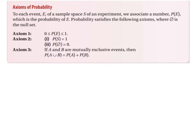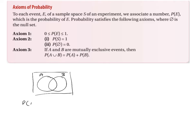The third part of the axioms says that if A and B are mutually exclusive, then the probability of A union B is equal to the probability of A plus the probability of B. Let's have a look at that last one. Normally, by definition, the probability of A union B is equal to the probability of A plus the probability of B minus the probability of A intersection B — and that is in your tables book.